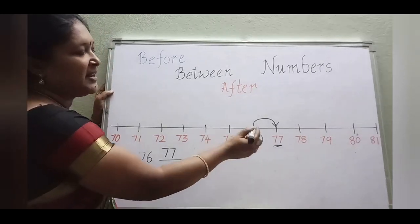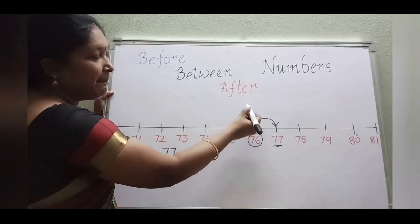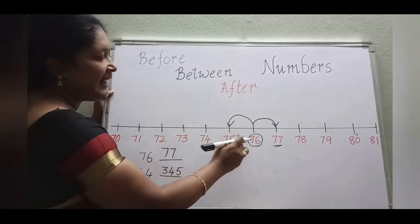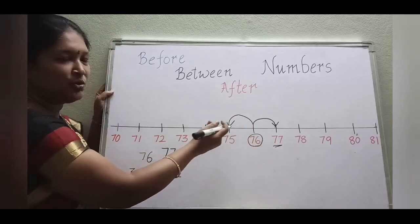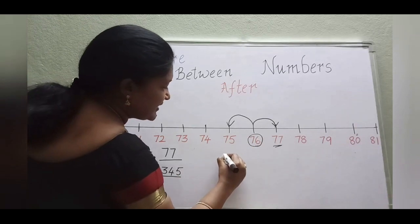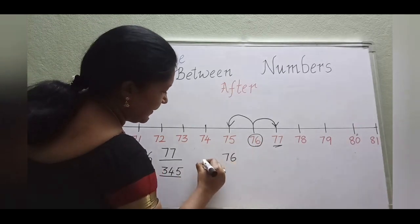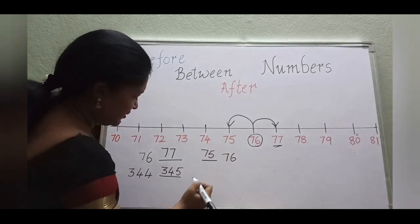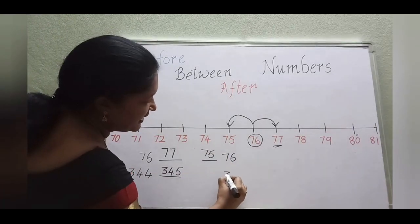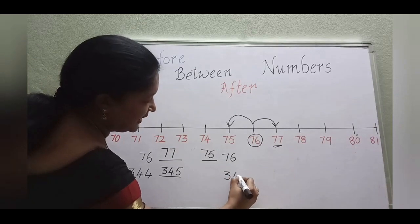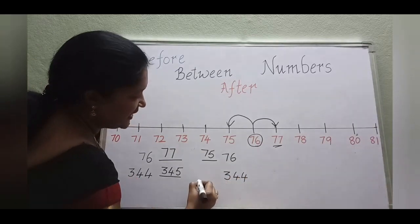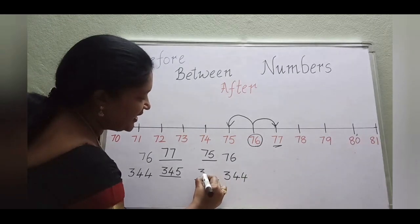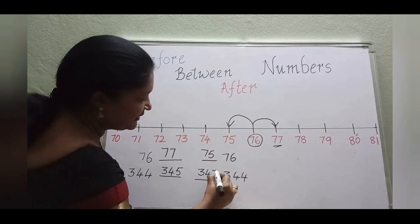Now let us take the same number 76 for the before number. 76 before number means the number one step moving to the backward. So 76 before number is 75. Take one example: 344. So 344 before number — which number will come? 343 will come.